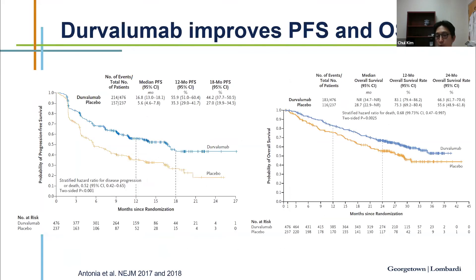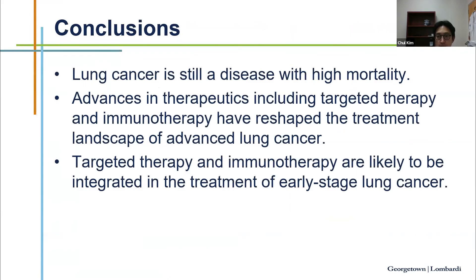To conclude: lung cancer is still a lethal cancer with high mortality and is the leading cause of cancer deaths worldwide and in the United States. But we are seeing more options for our patients — targeted therapy and immunotherapy — and it is a very exciting field. One of the first things we do is understand the stage and the molecular profile of the tumor; those two are very important. We are seeing the integration of targeted therapy and immunotherapy in earlier-stage disease, and we hope to improve cure rates for patients with non-metastatic disease.